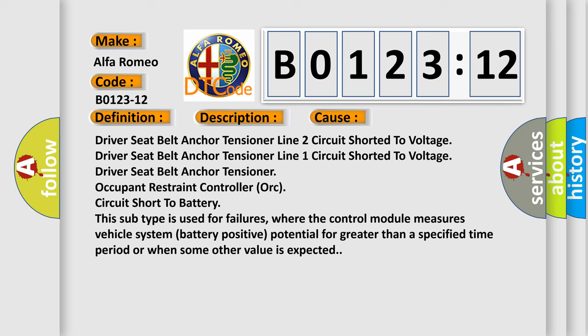This subtype is used for failures where the control module measures vehicle system battery positive potential for greater than a specified time period or when some other value is expected.